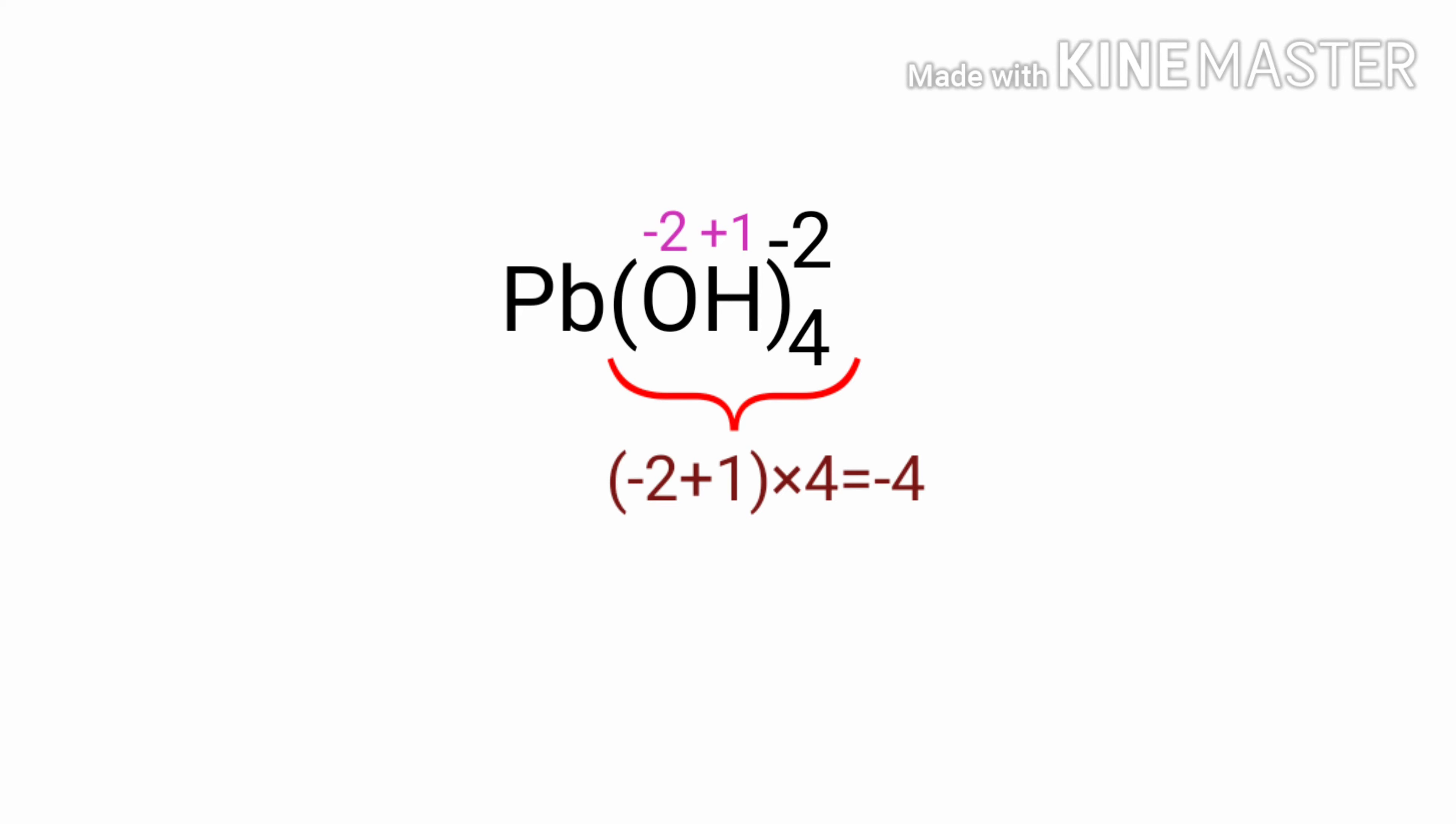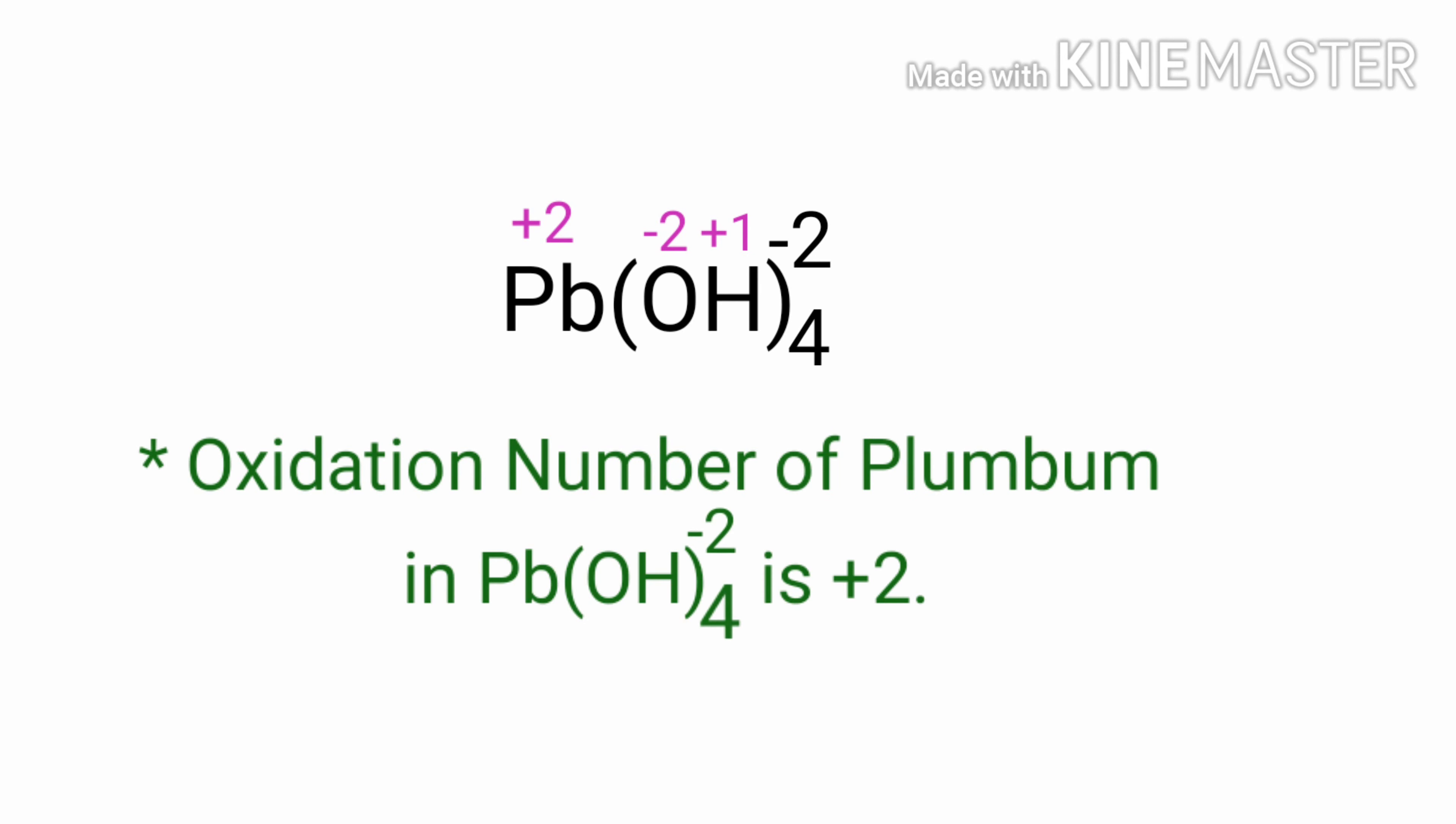So, the oxidation number of plumbum in Pb(OH)₄²⁻ should have plus 2 oxidation number. Therefore, the oxidation number of plumbum in Pb(OH)₄²⁻ is plus 2.